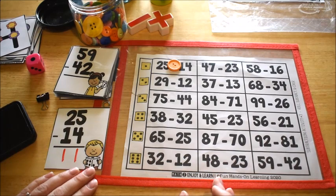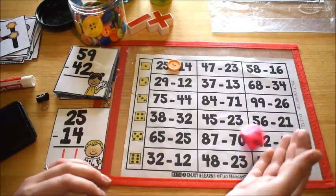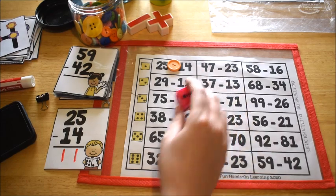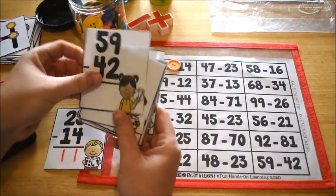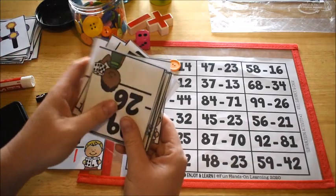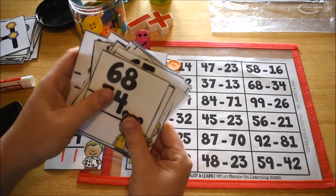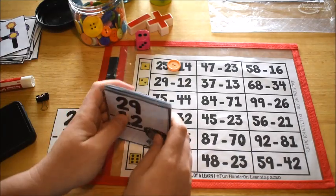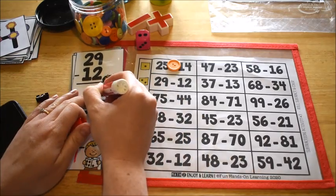They can set their card off to the side and roll again. So now I'm going to roll again, this time I got two. So I'm going to do this problem, 29 minus 12. So I look through here, I find 29 minus 12, and I write my answer.